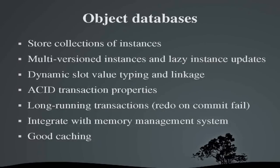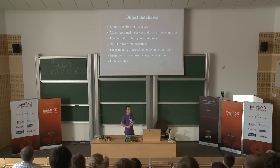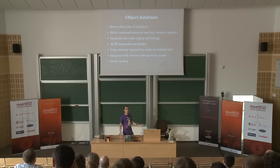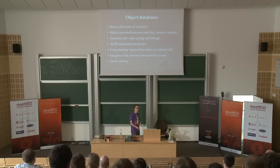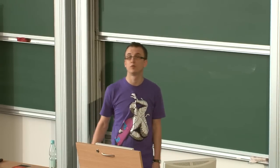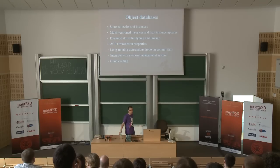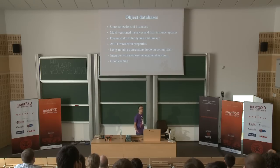Object databases — not all of them provide a rich set of operations. This one is based on AllegroCache. You have multi-version instances: when your schema evolves, objects older than the current schema are lazily updated as you access them, avoiding bulk updates when you redefine objects. You have dynamic slot value typing and linkage, important in ORM because Lisp is a dynamically-typed language. It has excellent ACID transaction properties and long-running transactions, is integrated with the garbage collection system, and has very good caching — it can predict which objects will be used longer.